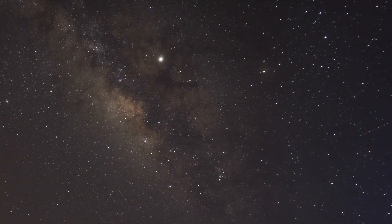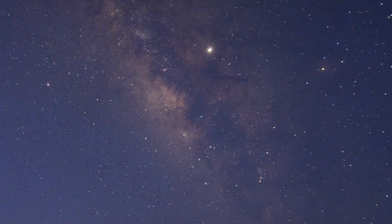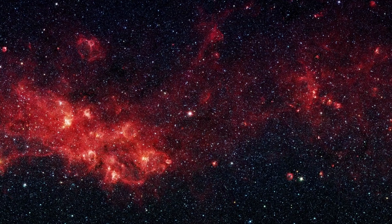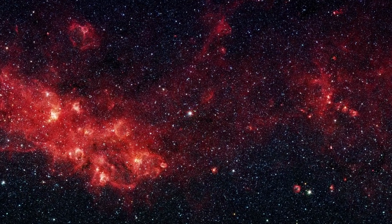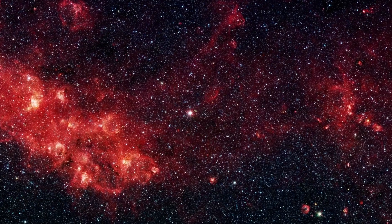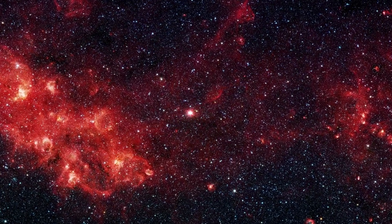But Proxima b isn't just close, it's also profoundly intriguing. It resides in the habitable zone of its parent star, where conditions are neither too hot nor too cold, potentially allowing liquid water to exist.